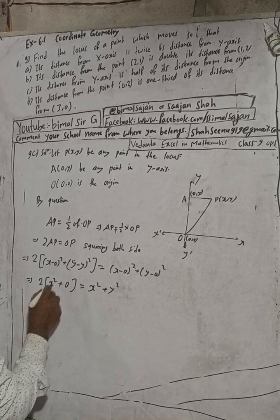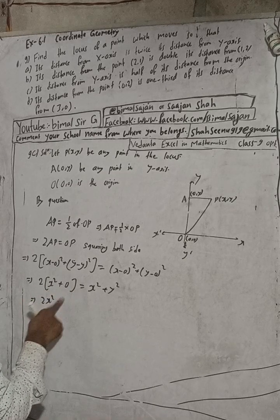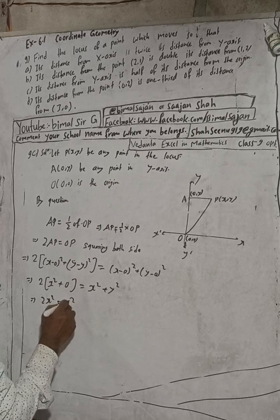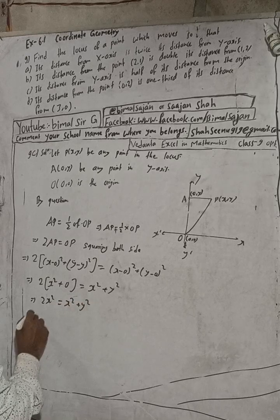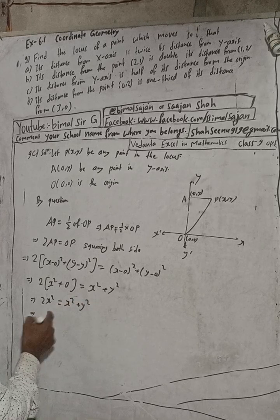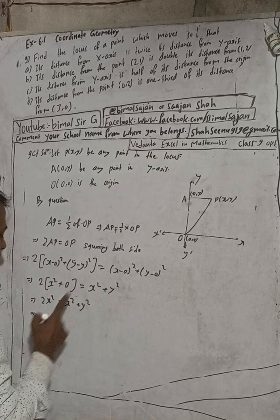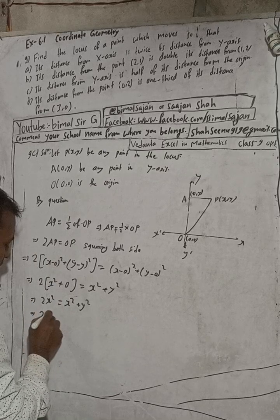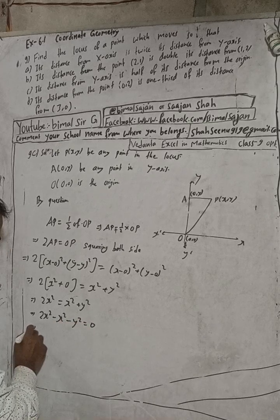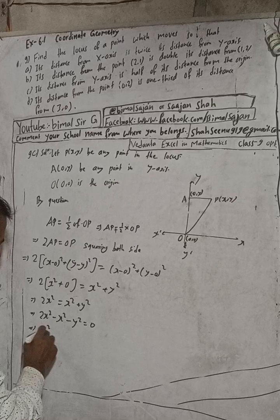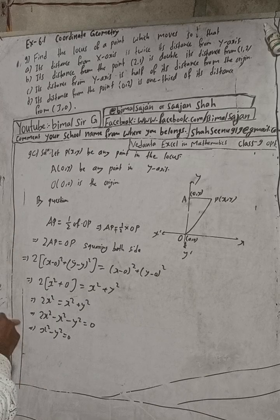So substituting: 4x² = x² + y². Bringing x² to the left side: 4x² − x² − y² = 0. Wait — actually let me check: this gives x² − y² = 0. But I made a mistake here.